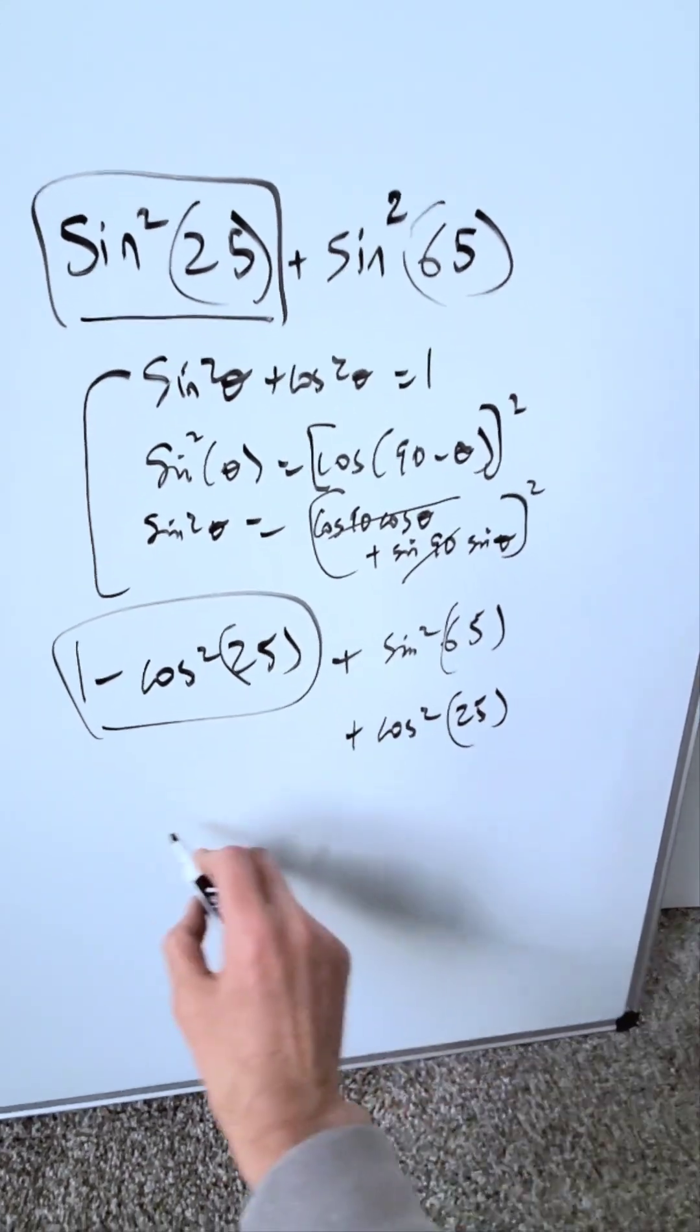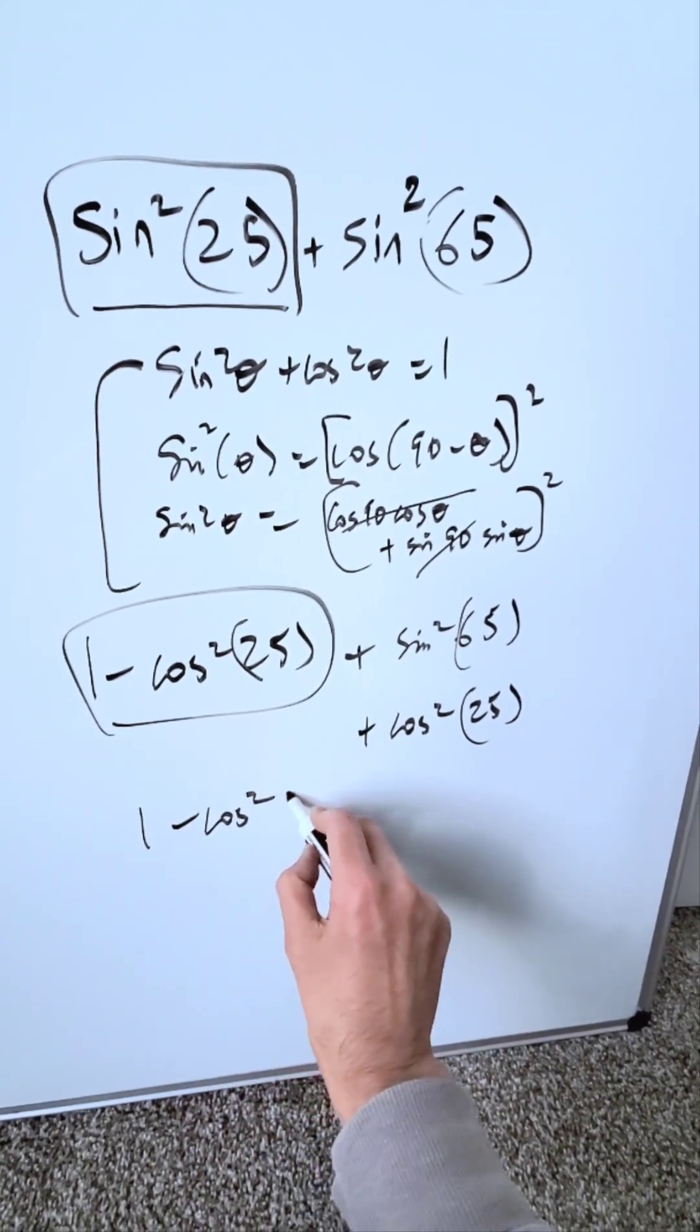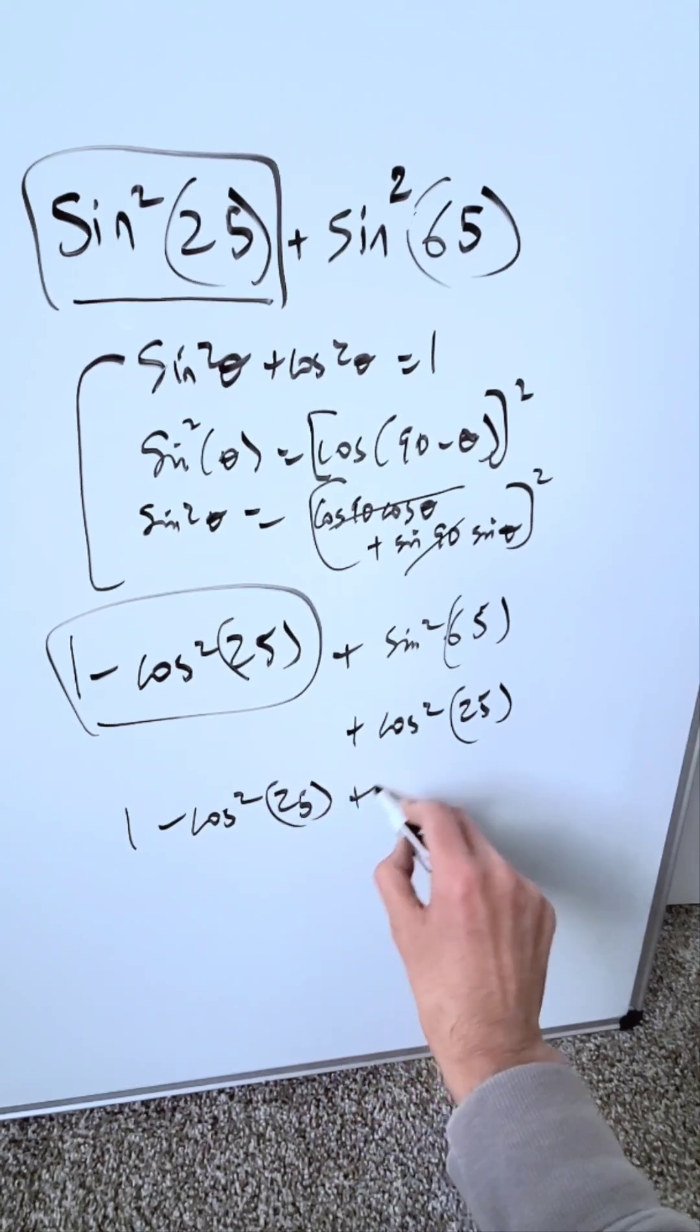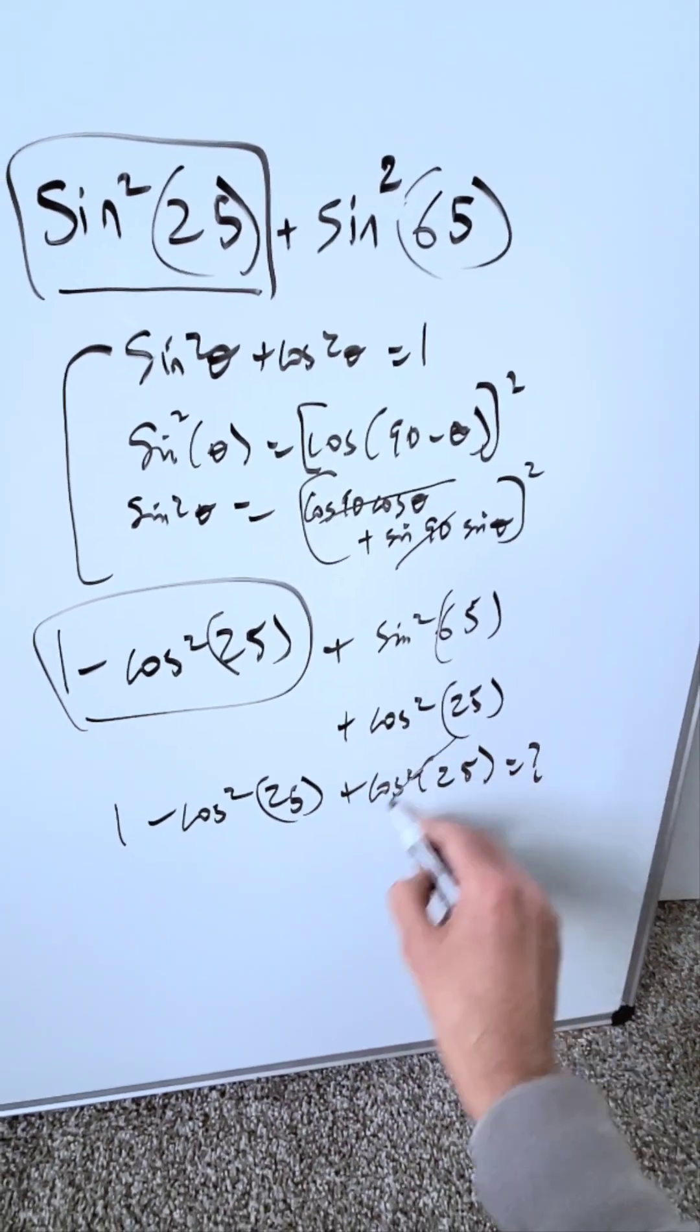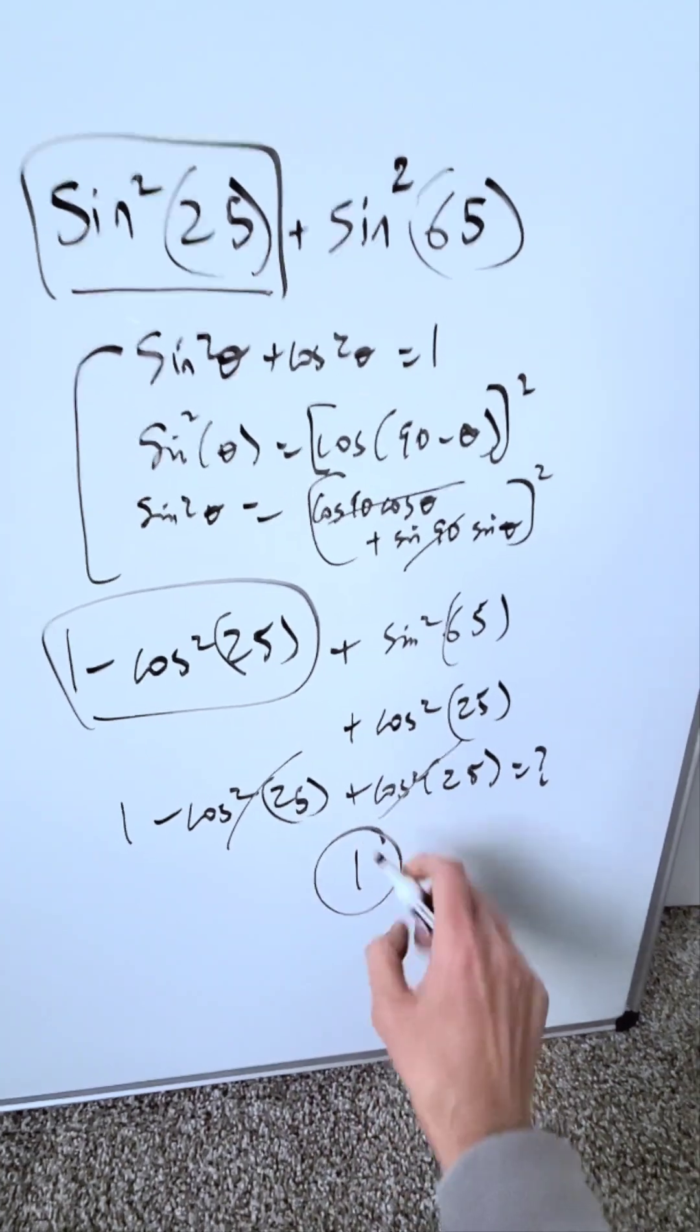This is what I have. Open all of this. I have 1 minus cosine squared of 25 plus cosine squared of 25 is equal to what? These two will cancel out. The only thing which remains is 1.